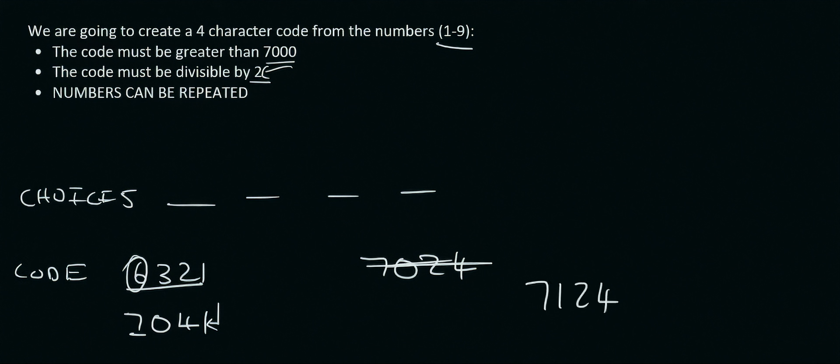So 7, 1, 2, 4, that is a perfect code. Why? Because it's bigger than 7,000 and it ends on an even number. So it means it will be divisible by 2.